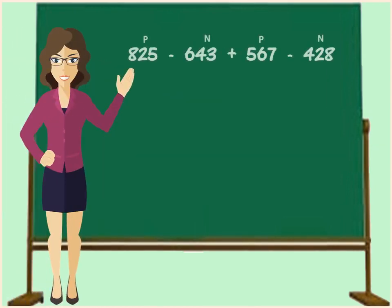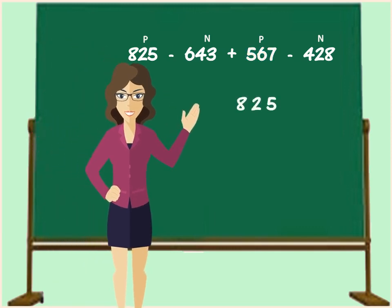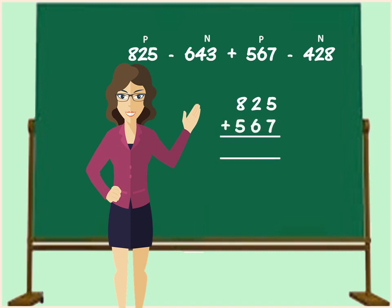The positive numbers in this sum are 825 and 567. So let us arrange 825 plus 567. And when we add, we get the sum 1392.